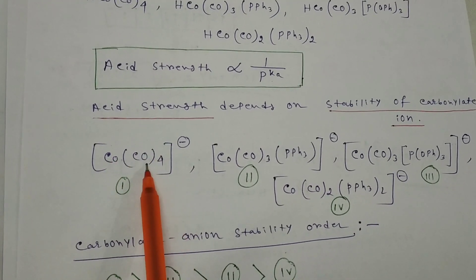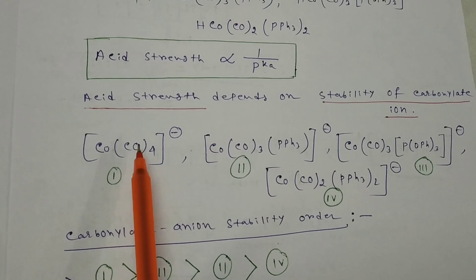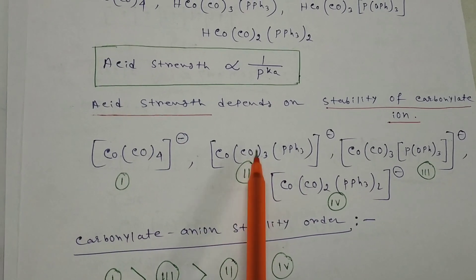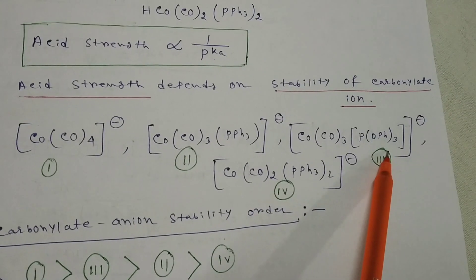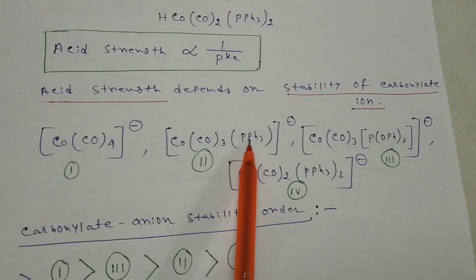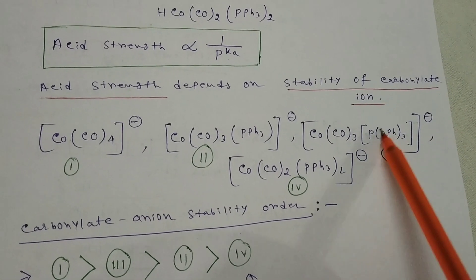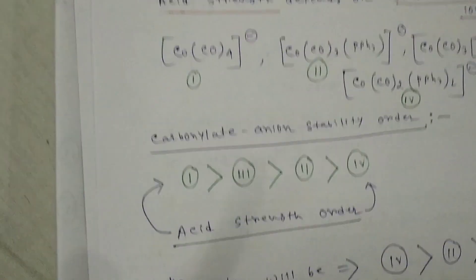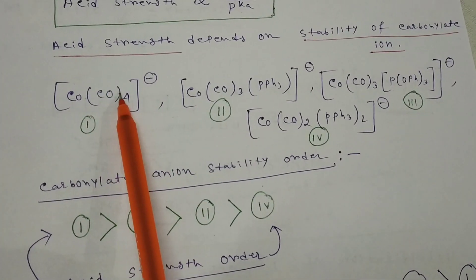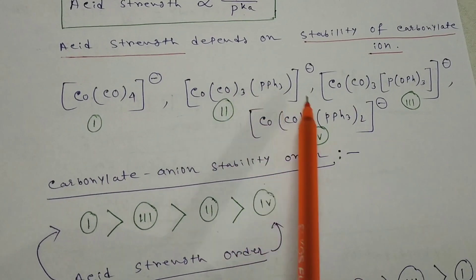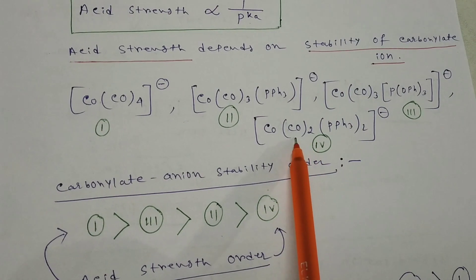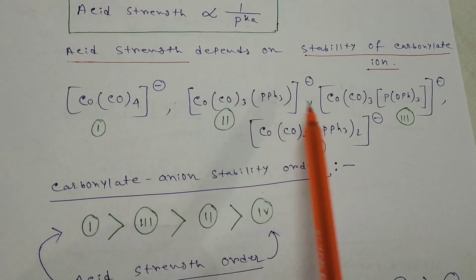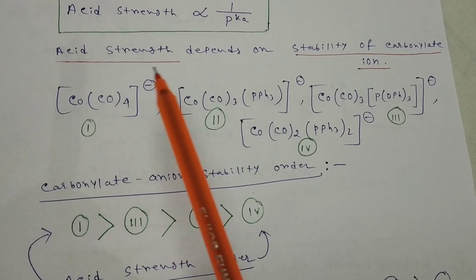The stability depends on backbonding. Cobalt is in minus 1 oxidation state in all cases. Backbonding will be more for carbon monoxide in the first case because CO is a strong pi acceptor - sigma donor and strong pi acceptor. The difference is that P(OPh)3 has more pi accepting ability than PPh3. So the stability order will be: first most stable, then second, third, and fourth. P(OPh)3 has more pi accepting property, so this will be second, this third, and this fourth.